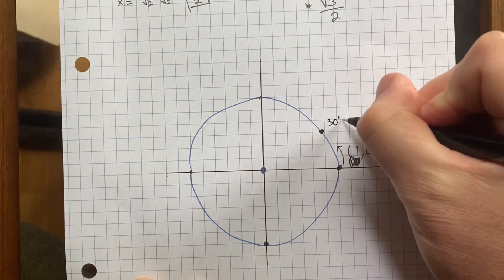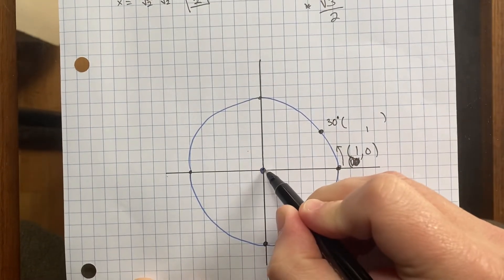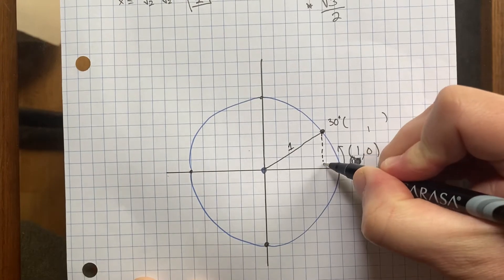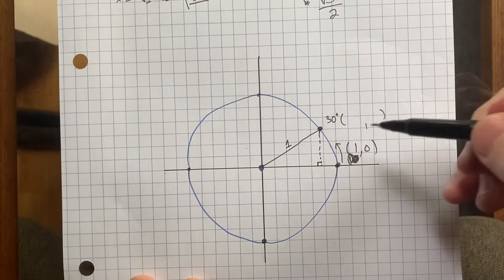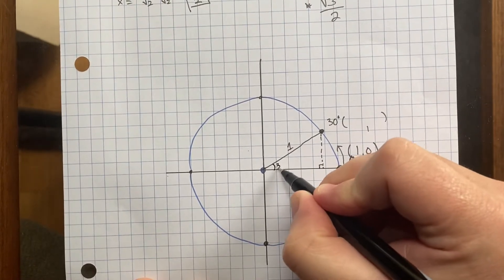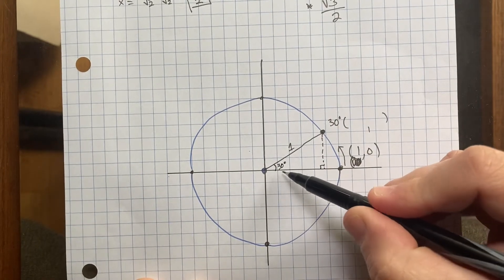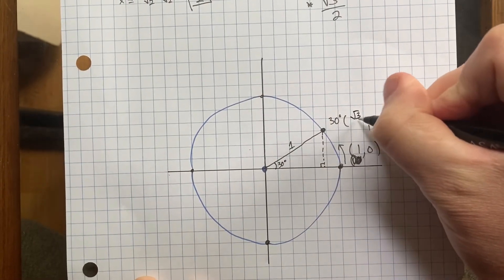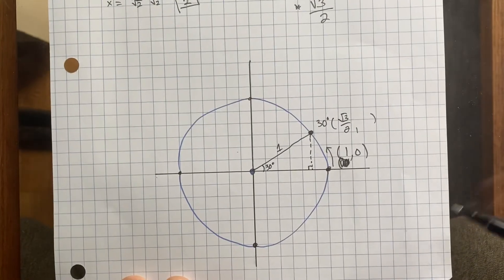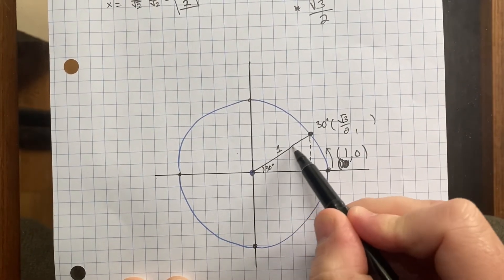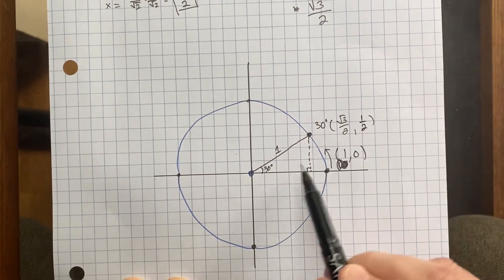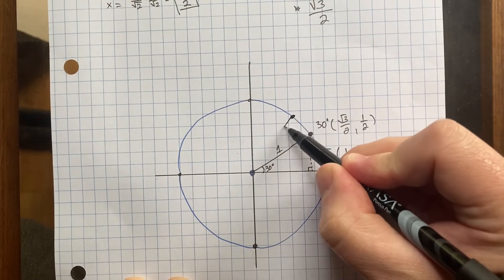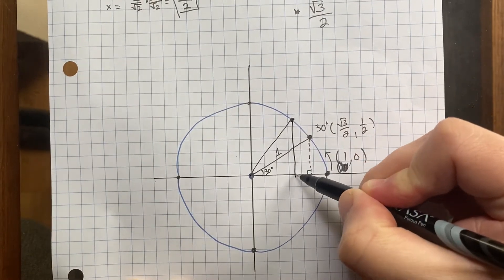Let's do the same thing for a 30-60-90. Remember that the hypotenuse is 2x and the shortest side is x. So if the hypotenuse is 1, then the shortest side is 1 half. The medium side is x times the square root of 3. Substituting x = 1/2, we get 1/2 times the square root of 3, which equals the square root of 3 divided by 2. So if the hypotenuse is 1 unit long, this side is 1/2 and this side is the square root of 3 divided by 2.